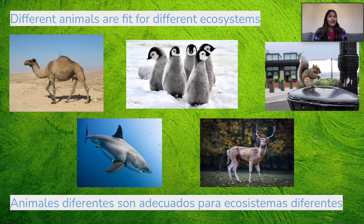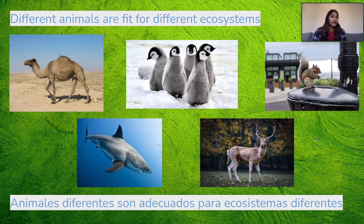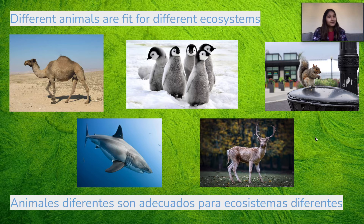Different animals are fit for different ecosystems depending on certain adaptations. For example, penguins have a thick coat of fur to keep them warm in the Arctic, the shark has gills so it can breathe underwater, and the deer can blend in really well in a forest.